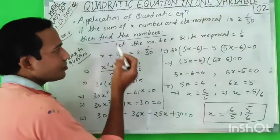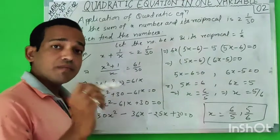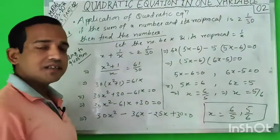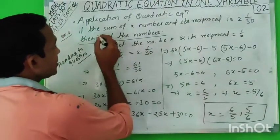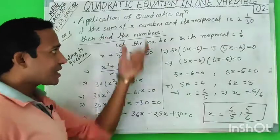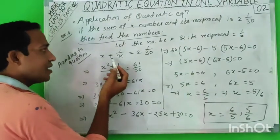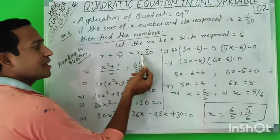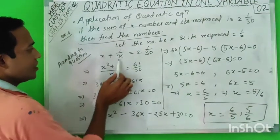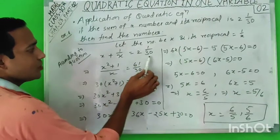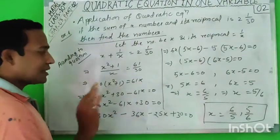According to the question, suppose we take the number as x. Its reciprocal is 1/x. The question says the sum of the number and its reciprocal equals 2 and 1/3. So x plus 1/x equals 61/30. Taking LCM as x, we get x² + 1 upon x is equal to 61/30.